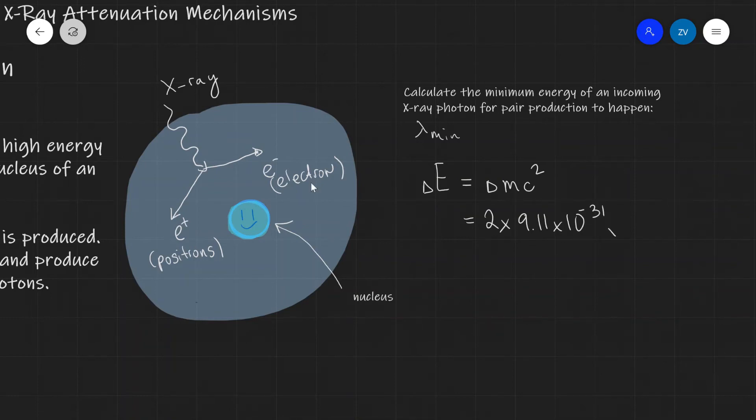Our factor of c squared is of course 3.0 times 10 to the 8, and all of this is squared. And if we were to plug this into a scientific calculator, we are going to get approximately 1.6 multiplied by 10 to the power of minus 13 joules.